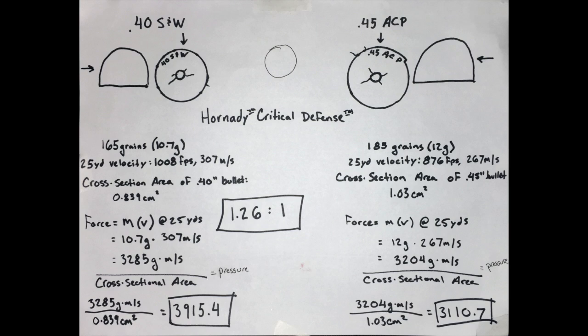For the 45, it's a 12 gram projectile traveling at 267 meters per second at 25 yards, giving us 3204 grams-meters per second. Divide that force by its cross-sectional area of 1.03 cm² to get a pressure of 3110.7.